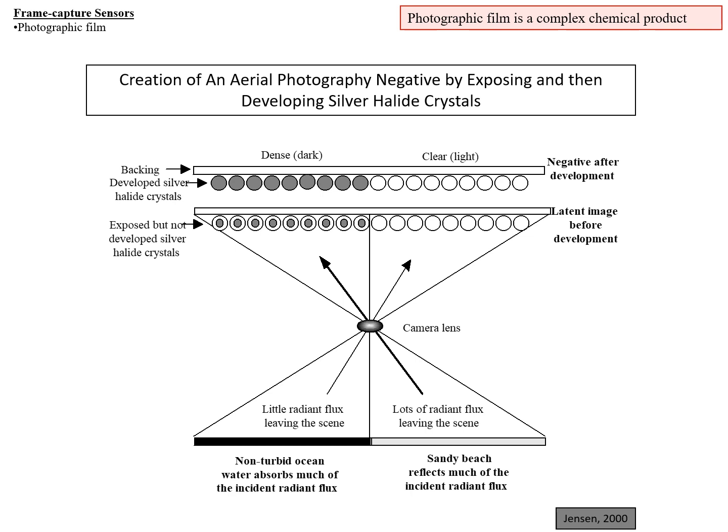After you've gone through the development process, the latent image is revealed. On the left, you're going to have dark crystals. On the right, you'll have light crystals. This is a negative — the area that was ocean water and was dark is now bright, and the area that was bright is now dark. That's why it's called a negative.